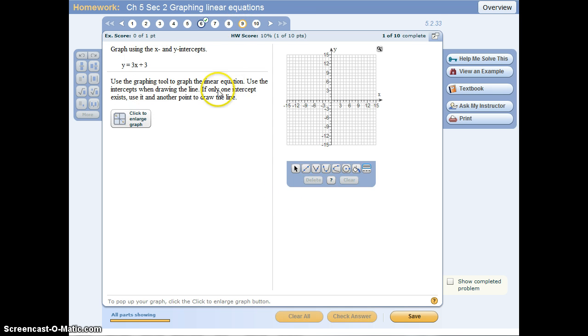Another example would be this graph here where it says graph using x and y-intercepts. If I use slope and y-intercept, it will count this graph wrong. I have to use x and y-intercepts.